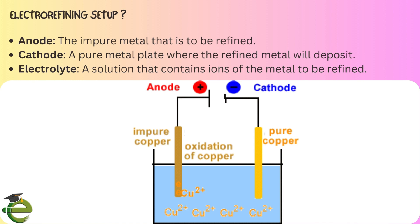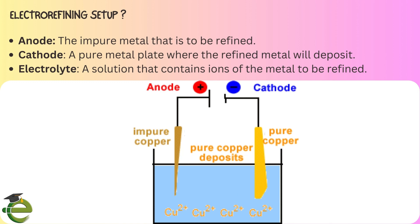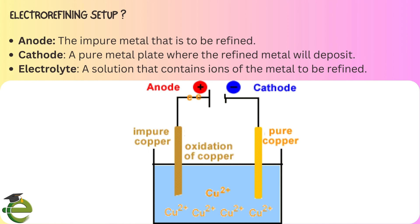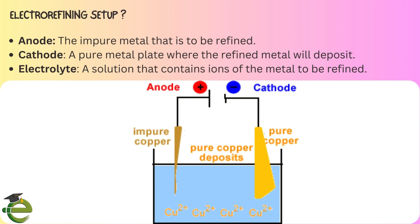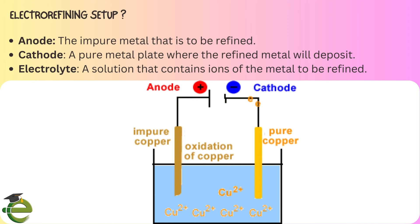In the apparatus for electrorefining, the impure metal is made the anode and the pure metal is made the cathode. The electrolyte contains the same metal ions. Copper atoms at the anode undergo oxidation and become copper ions that enter the solution. These copper ions then travel to the cathode, which is 100% pure copper, and are deposited as copper metal on reduction.